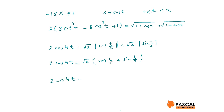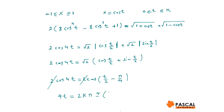By using a trig identity, we write cos(t/2) plus sin(t/2) equals square root of 2 times cos(t/2 minus pi/4). So the equation becomes cos(4t) equals cos(t/2 minus pi/4), which means 4t equals either 2kπ plus (t/2 minus π/4) or 2kπ minus (t/2 minus π/4).